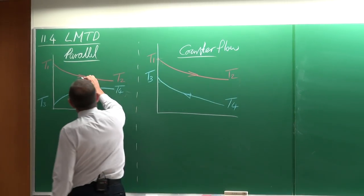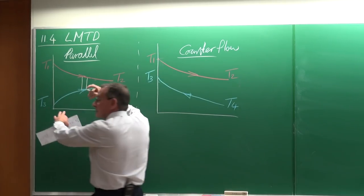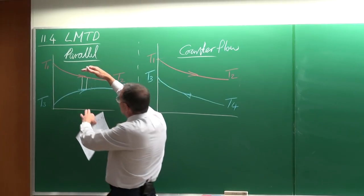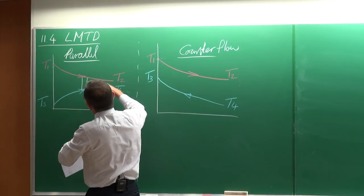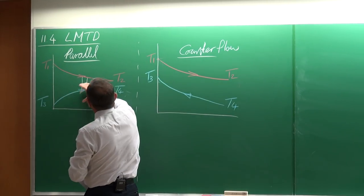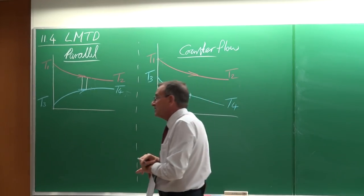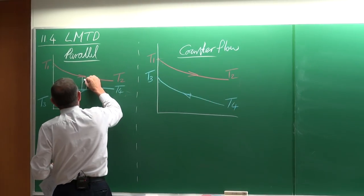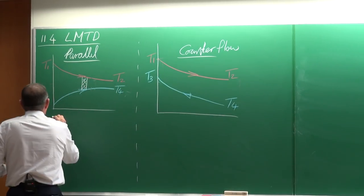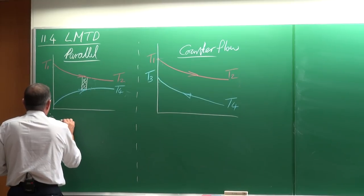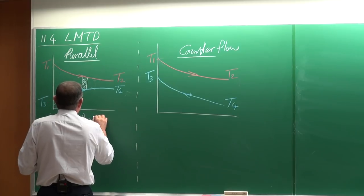When we looked at this previously, we found that the temperature difference between the wall and the other stream is not constant — normally it is an exponential type of temperature difference. When we look at the control volume, we found that we can write the heat transfer rate as equal to the heat transfer coefficient, the area, and the LMTD.